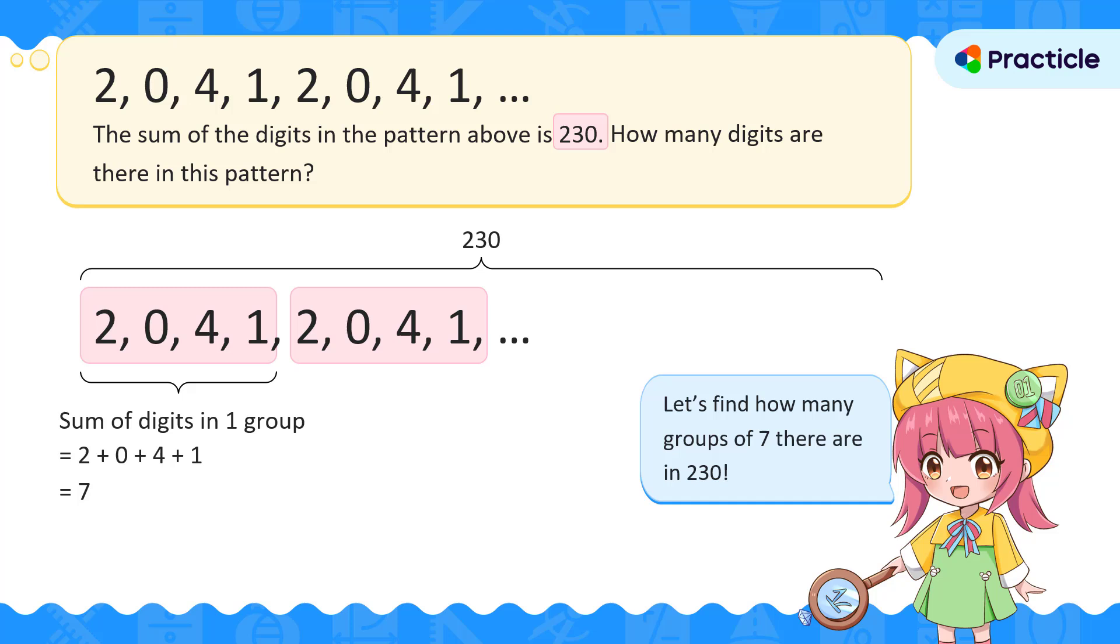If you said find how many groups of 7 there are in 230, you're right. Let's divide 230 by 7. What do you get? Yes, 32 with a remainder of 6. What does this answer mean?